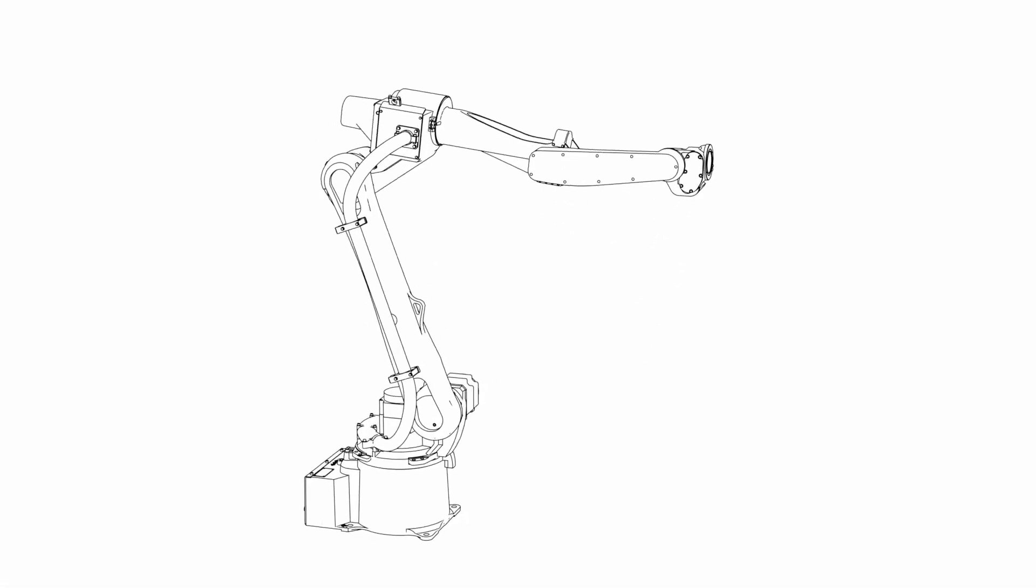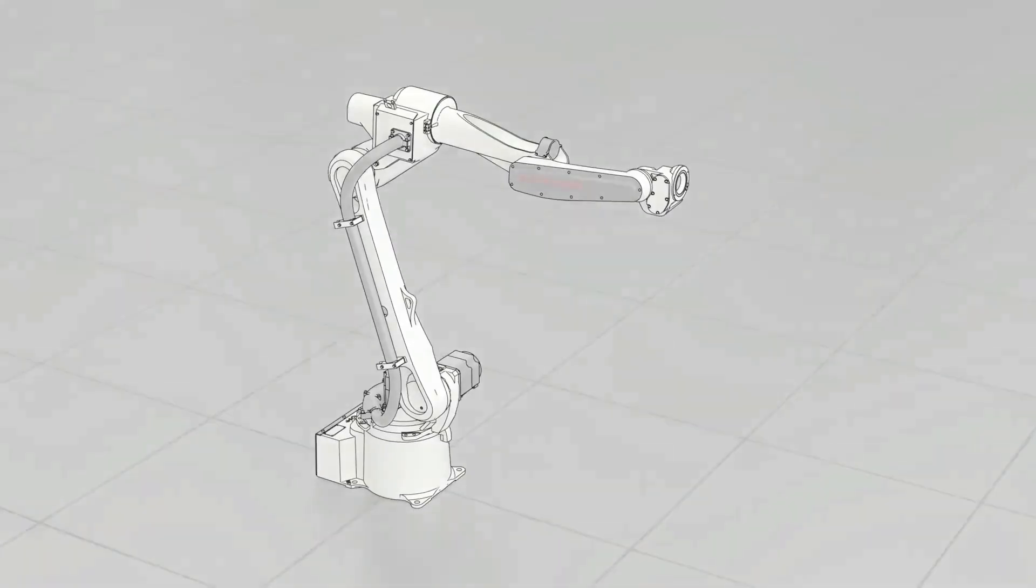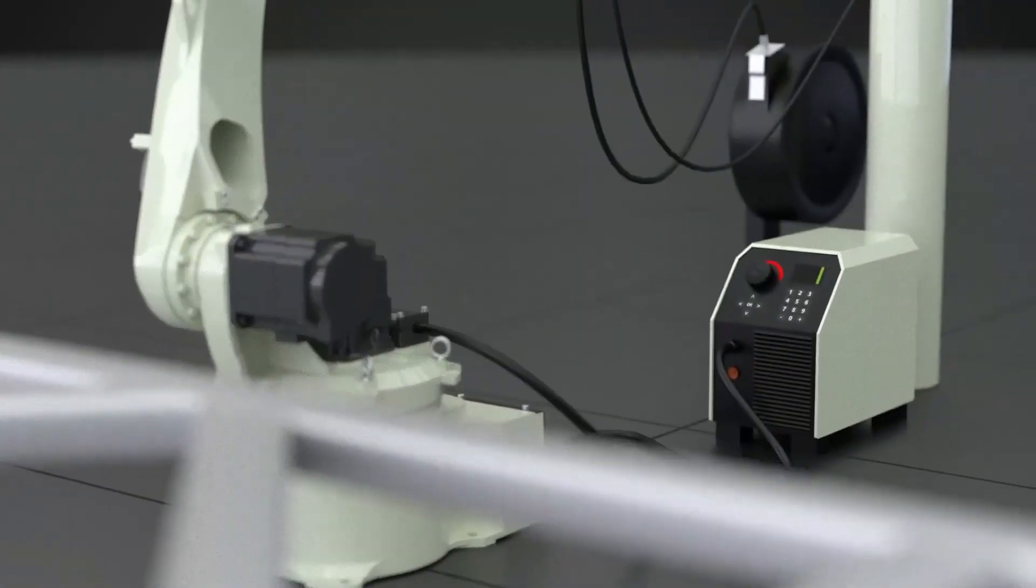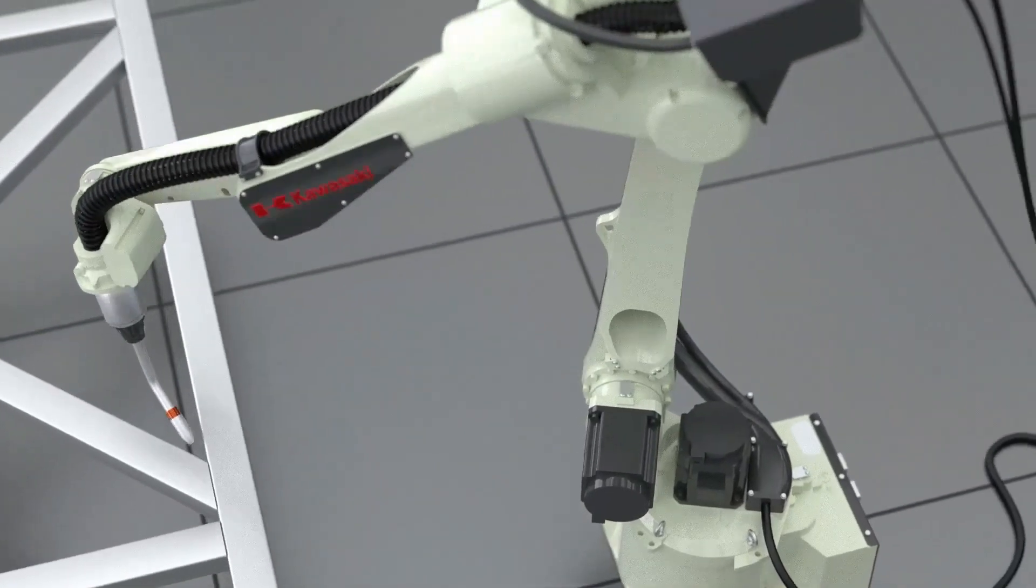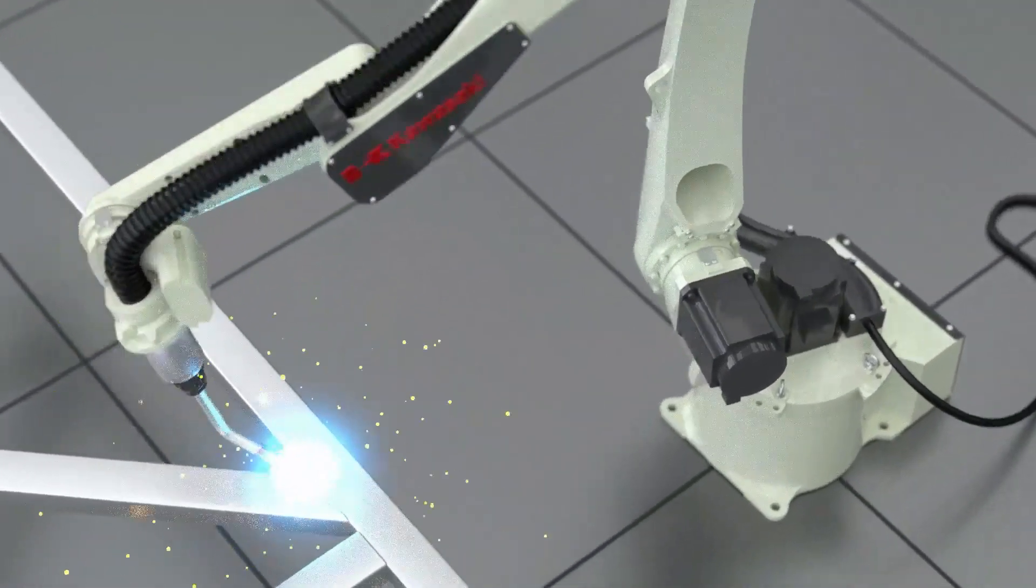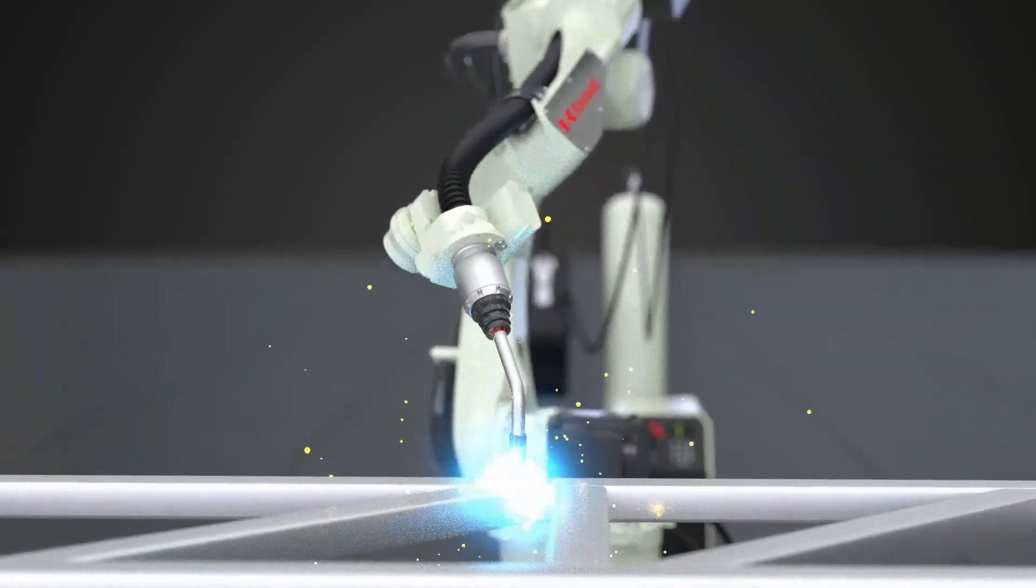We introduce the Kawasaki Robotics BA-6L. The arc welding robot uses state-of-the-art technology to achieve maximum quality and flexibility at all times.